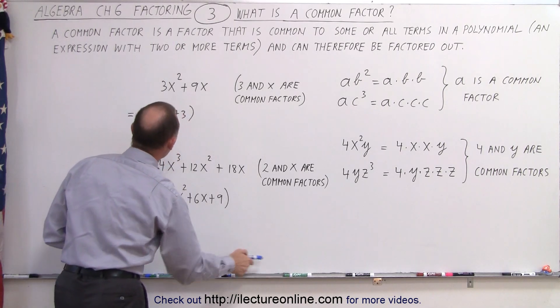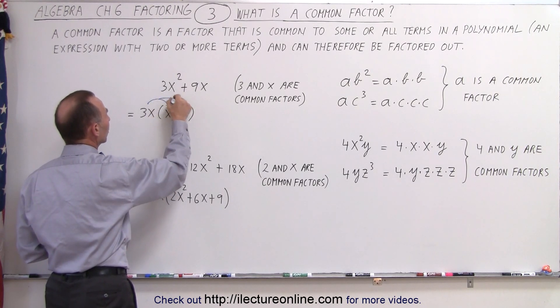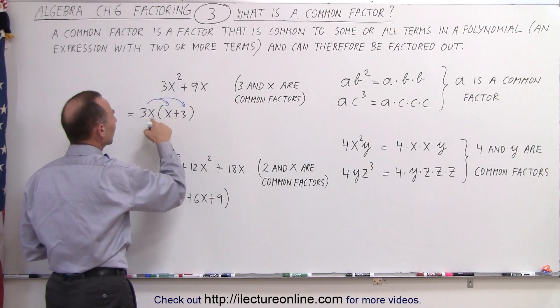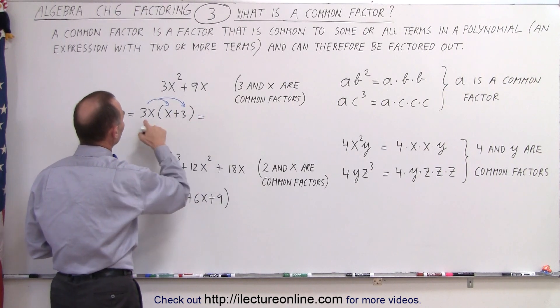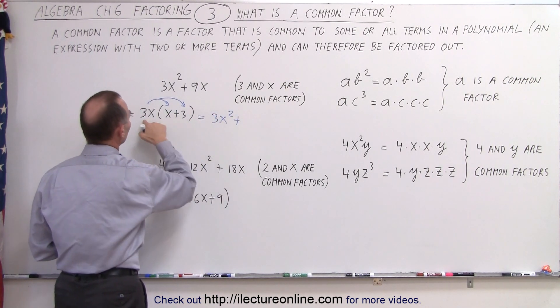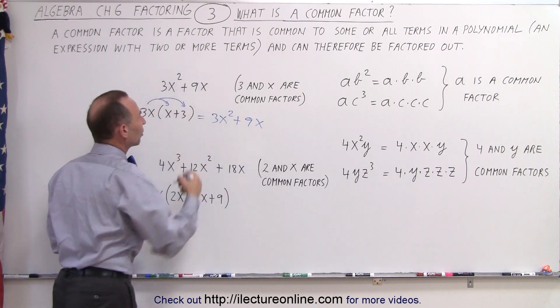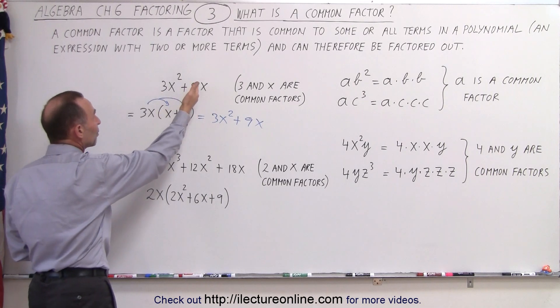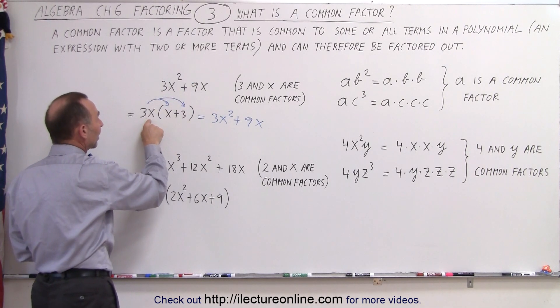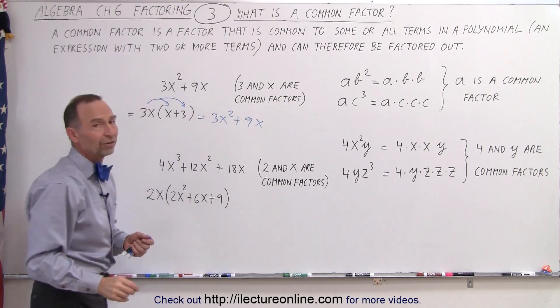We multiply things back in. If we multiply 3x times x, we get 3x². If we multiply 3x times 3, we get 9x. So this can be written as 3x times x, which is 3x², plus 3x times 3, which is 9x, which is the same expression we started with.